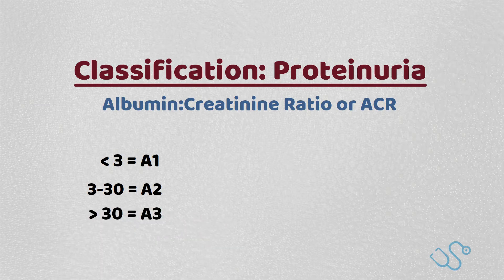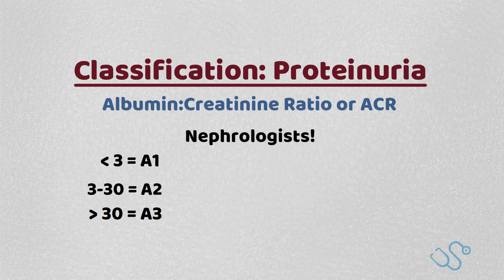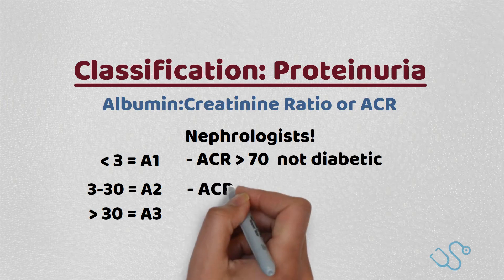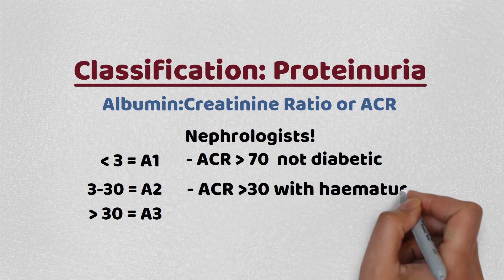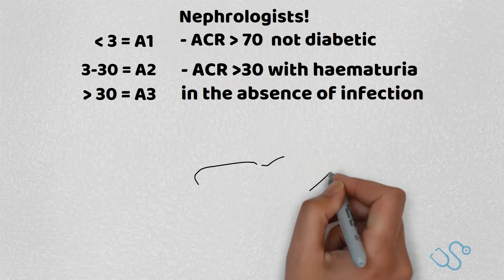This is important because it helps classify the severity of CKD in terms of protein loss, with nephrologists needing to be informed in the following circumstances: an ACR above 70 in a patient that's not diabetic, or an ACR above 30 with haematuria in the absence of infection. Using both the GFR and ACR combined, you get a full classification that helps quantify how many times a year a patient needs their renal function checked.